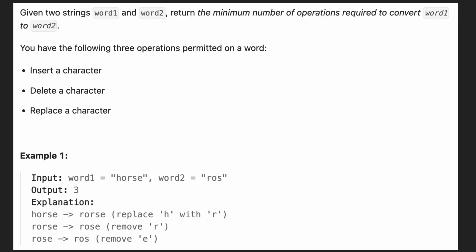Hi everyone, it's Sorkin. Today we have a problem where we are given two strings, word one and word two, and we need to return the minimum number of operations required to convert word one to word two. We can perform the following operations: insert a character, delete a character, or replace a character.